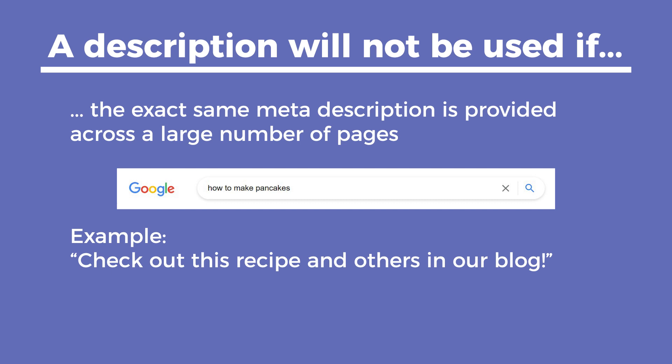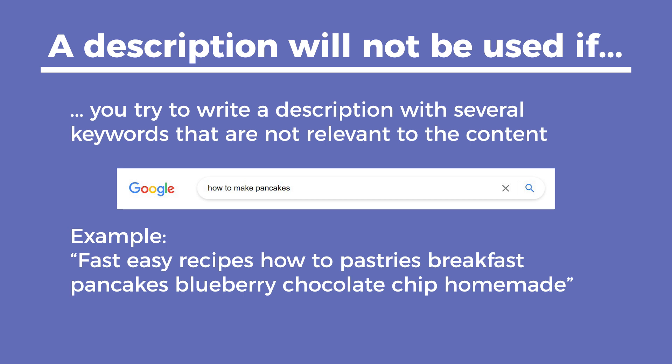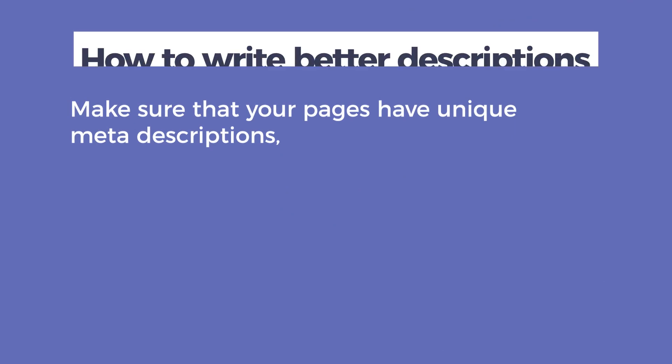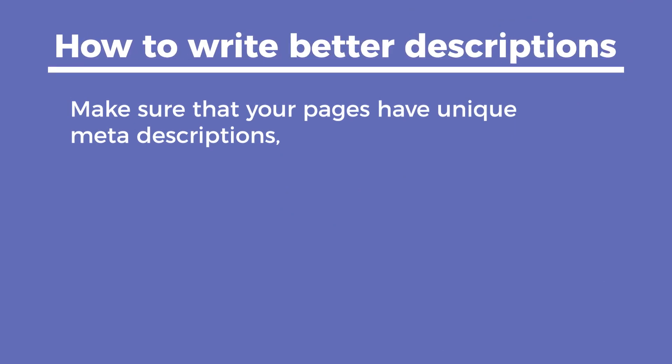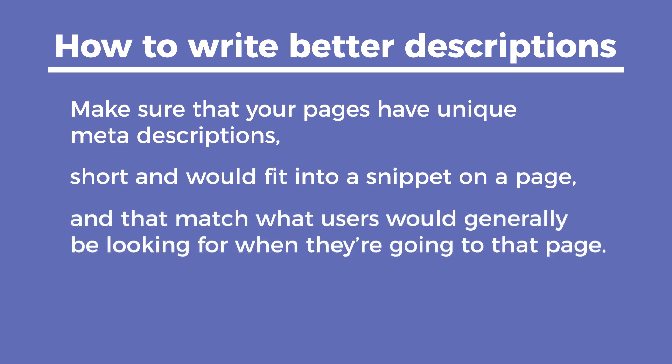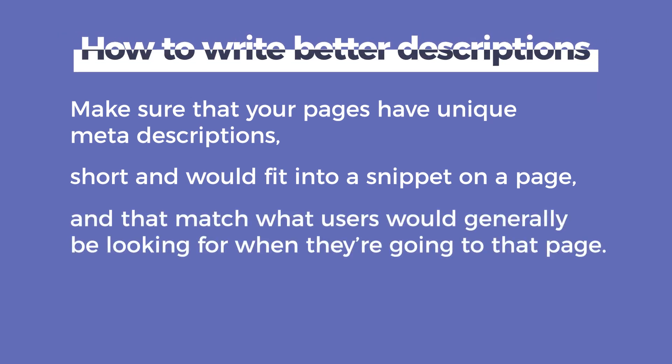Also, if the exact same meta description is provided across a large number of pages, it will be disregarded. And even though sometimes Google itself uses a collection of keywords that it finds on the page, if you try to write a description with several keywords that are not relevant to the content, it won't be used either. This information was given by Google's John Mueller during an online session of Google Webmaster Central Office Hours. His suggestion was to make sure that your pages have unique meta descriptions that are short enough to fit into a snippet on a page, and that they match what users would generally be looking for when they're going to that page.